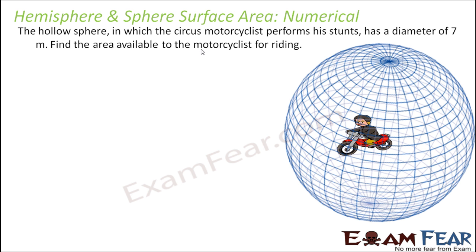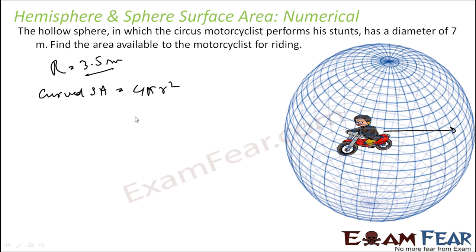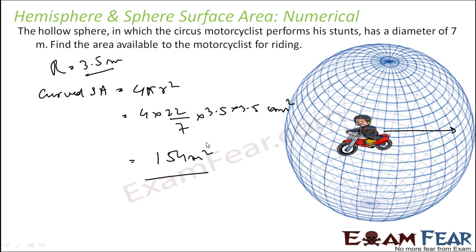A hollow sphere in which a circus motorcyclist performs a stunt — you must have seen this — has a diameter of 7 meters, so the radius is 3.5 meters. We have to find the area available for the motorcyclist for riding. The area available is the curved surface area: 4πr² = 4 × (22/7) × 3.5 × 3.5 = 154 m².